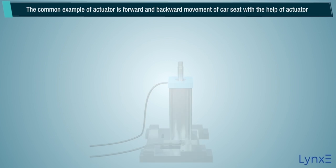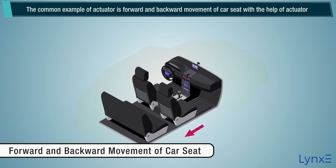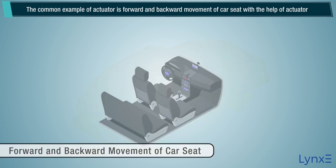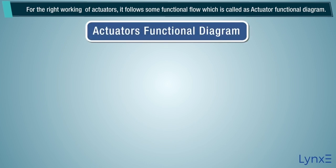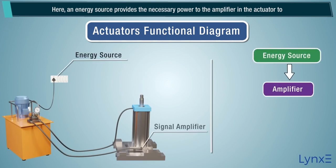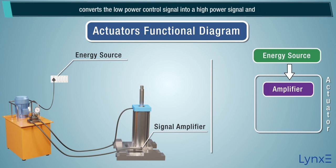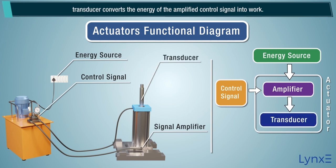A common example of an actuator is the forward and backward movement of a car seat. For the right working of actuators, it follows some functional flow called the actuator functional diagram. An energy source provides the necessary power to the amplifier in the actuator to convert the low power control signal into a high power signal, and a transducer converts the energy of the amplified signal into work.